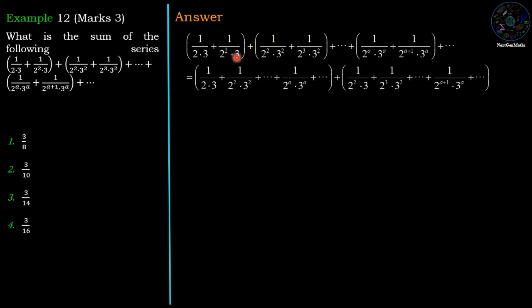Which is 1/(2²×3) plus 1/(2³×3²) plus 1/(2^(n+1)×3^n).